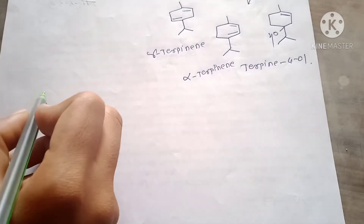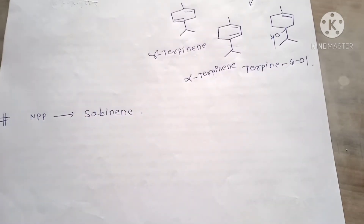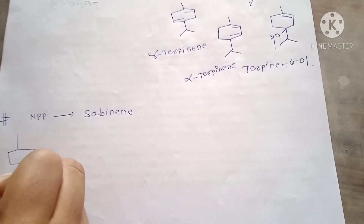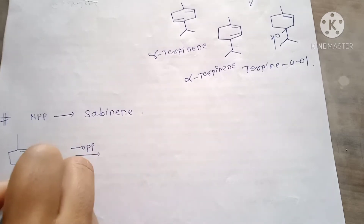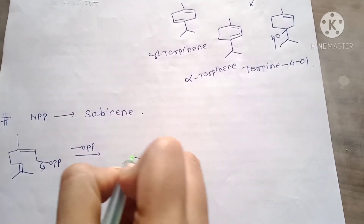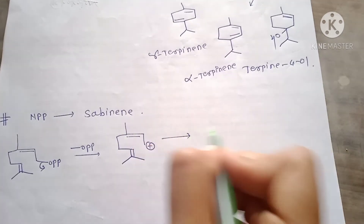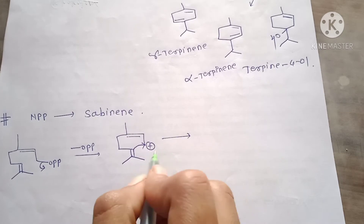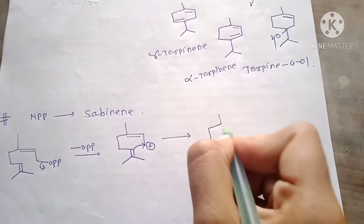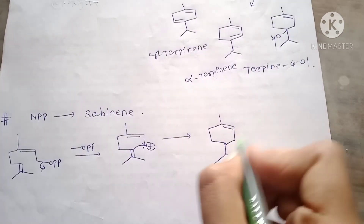Now next, the synthesis of sabinene from NPP. First draw the structure of NPP. Step one is the loss of OPP and we will get the allylic carbocation here with positive charge. Next step: this pi bond attacks here and stabilizes the carbocation, and we will get the structure with positive charge here.